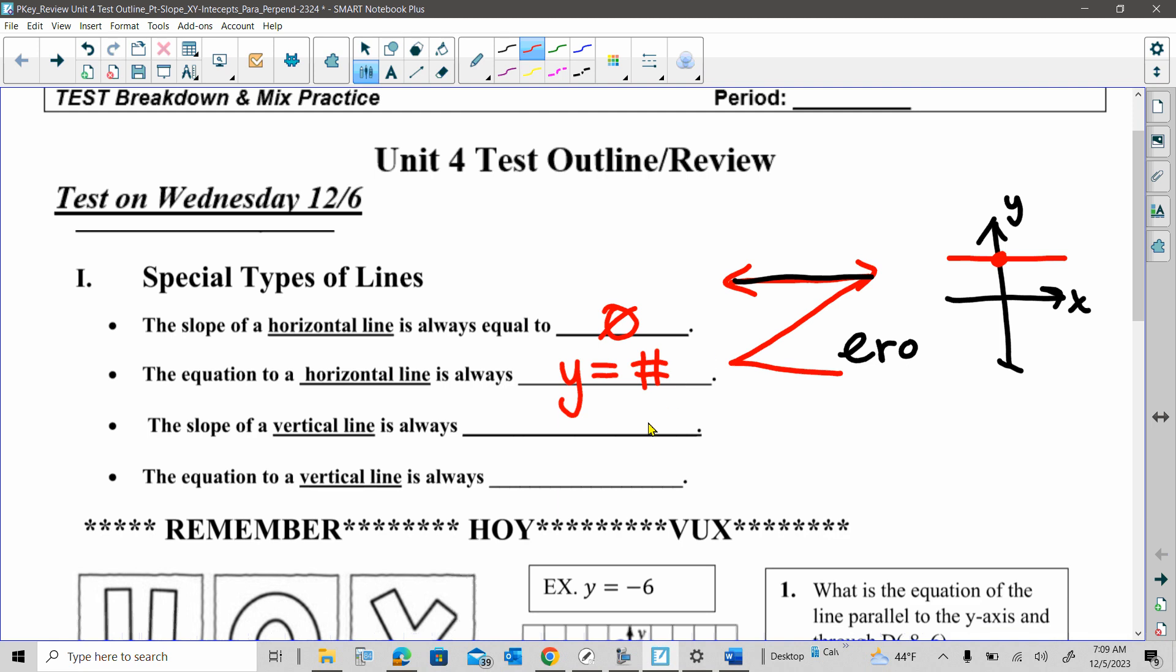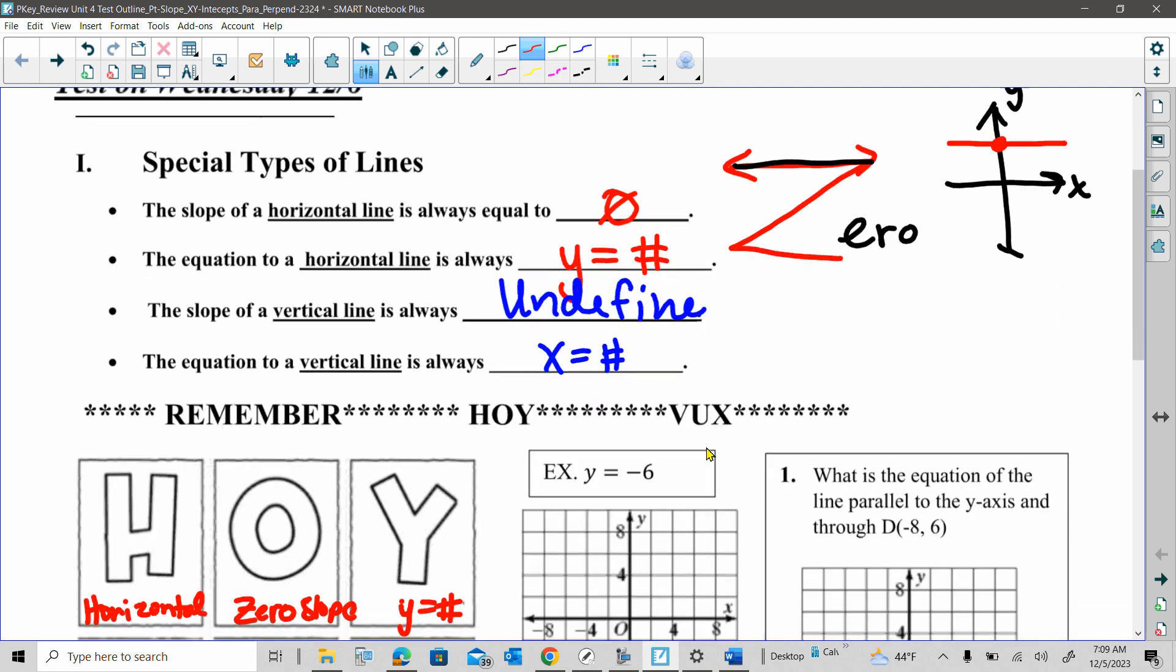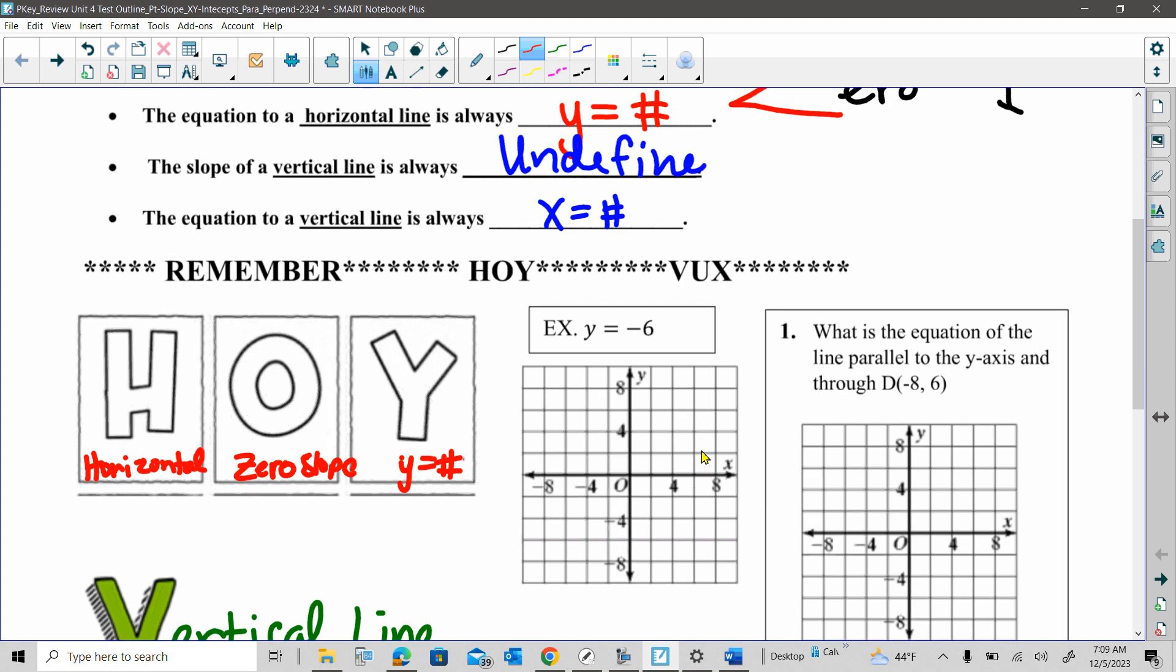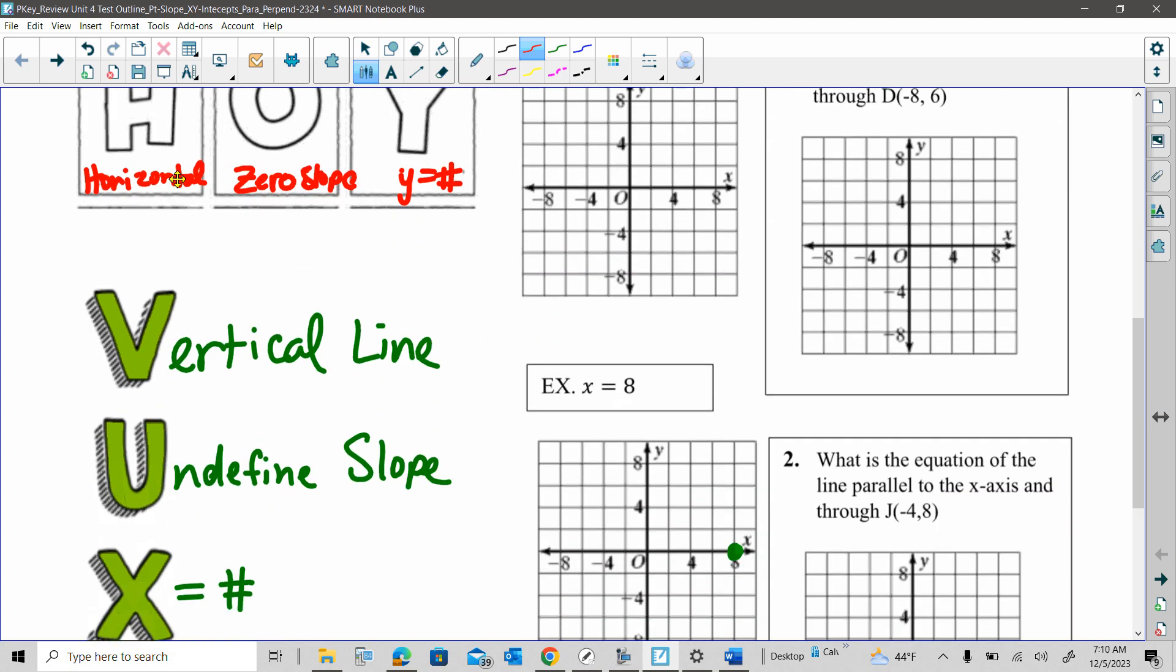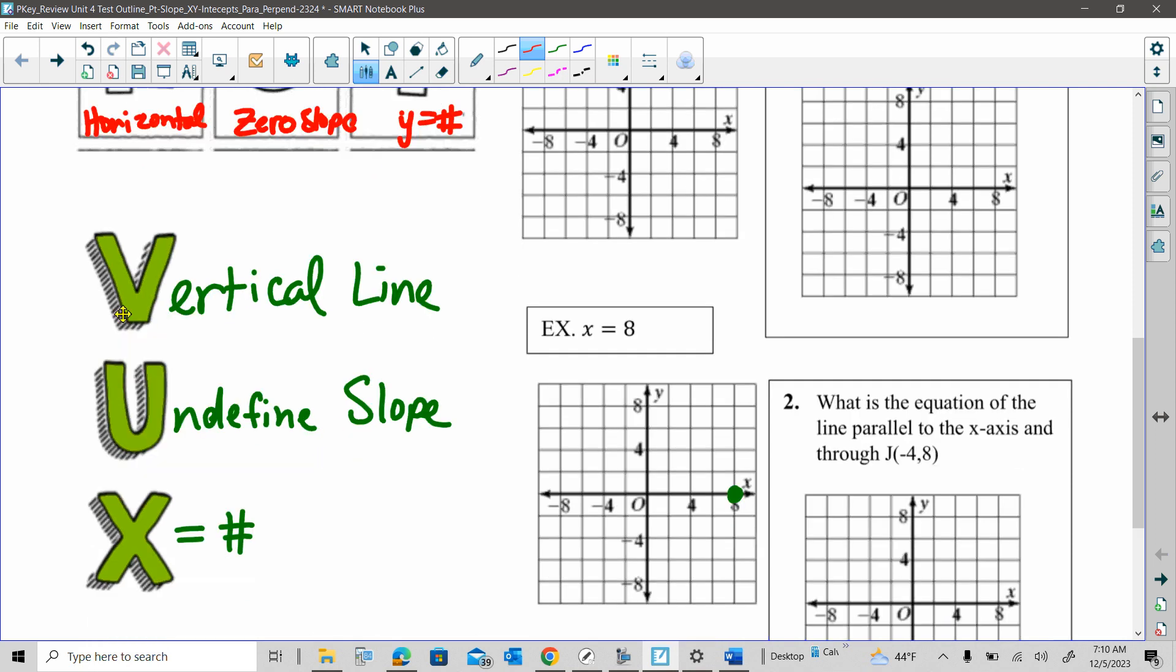So vertical is when we have undefined slope. You can abbreviate that U-N-D, and it's always x equals a number. So the key to this, you might want to memorize these acronyms right here: HOY-VUX. The H is for horizontal, O is for zero slope, Y equals a number. Vertical line, V for vertical, U for undefined slope, X equals a number.